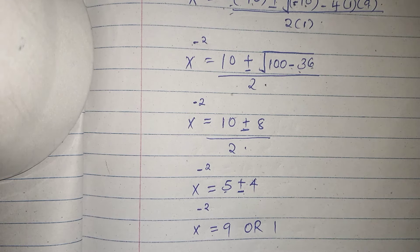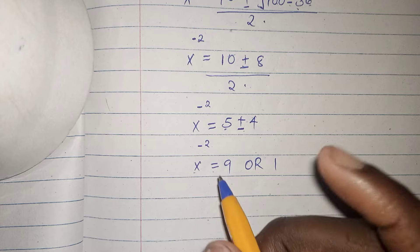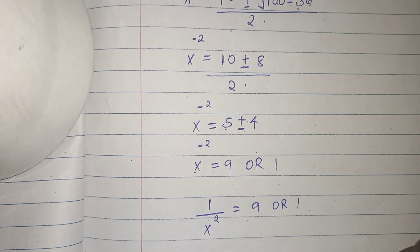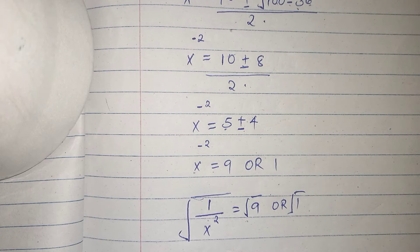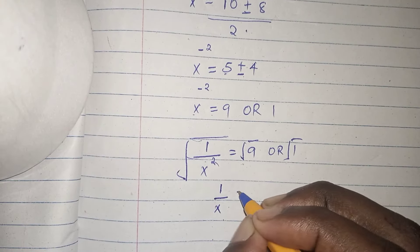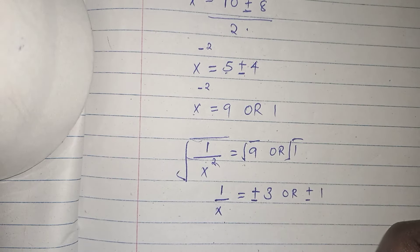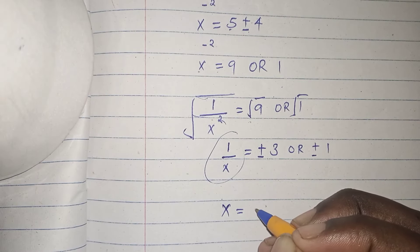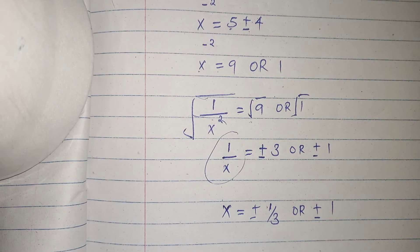We want the value of x, so we write x to the power of negative 2 as 1 over x squared equals 9 or 1. Taking the square root, x equals plus or minus 1 over 3, or plus or minus 1. We then take the reciprocal of everything, so x is equals to plus or minus one third, or plus or minus 1.